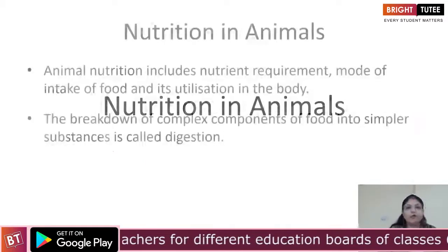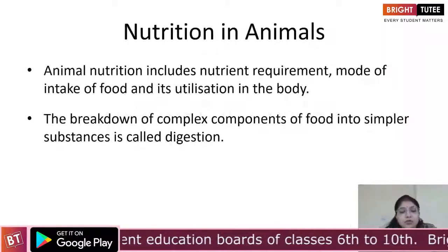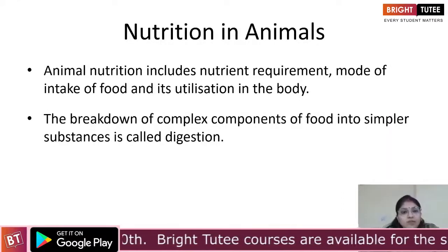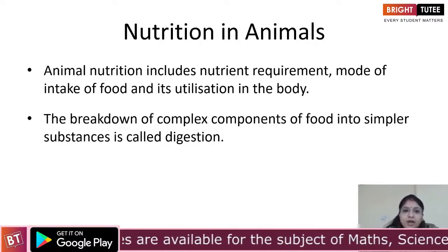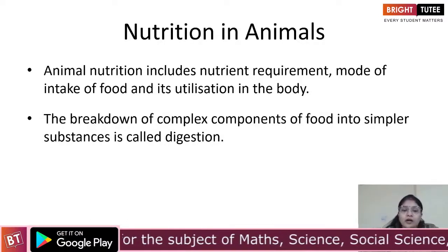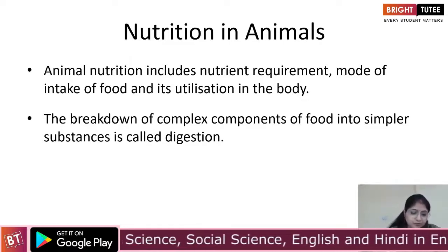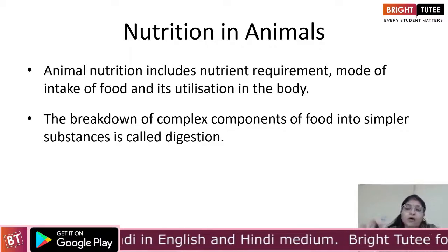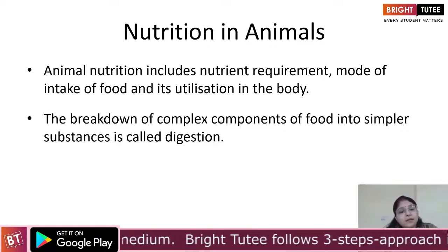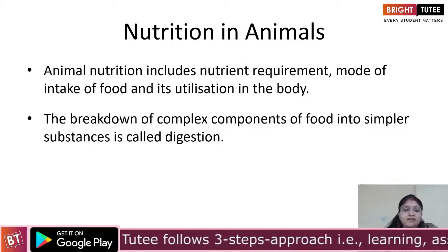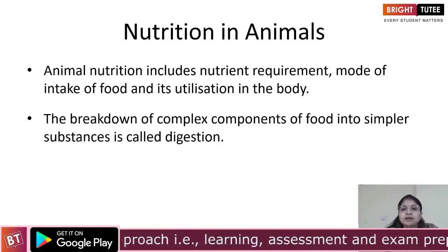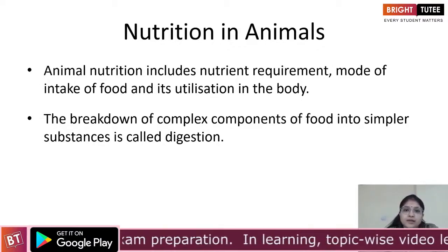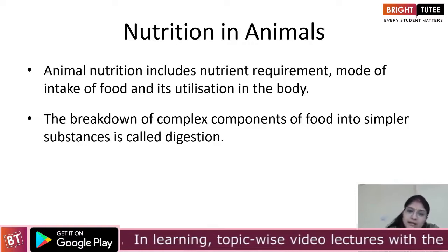Nutrition, as we have already discussed in class 6, is a very important process and with the help of this process we are able to maintain a healthy life. When we talk about animal nutrition, the important thing to remember is that animals are directly or indirectly dependent on plants. Some animals eat plants directly, some eat plant-eating animals, whereas a few animals — including human beings — feed on both plants and animals.